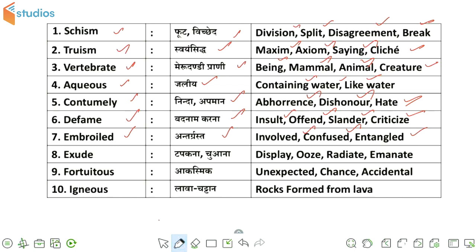अगला word है exude. Exude की meaning होती है टपकना या चुवाना. इसके synonyms हैं: display, ooze, radiate, and emanate.